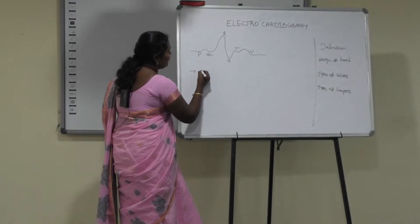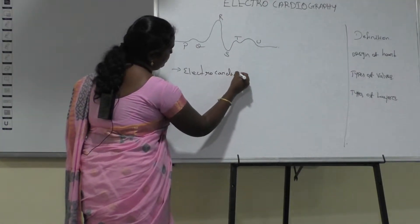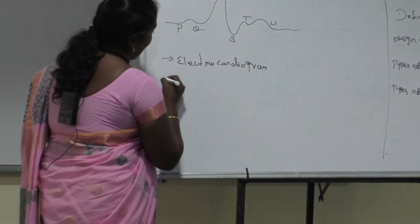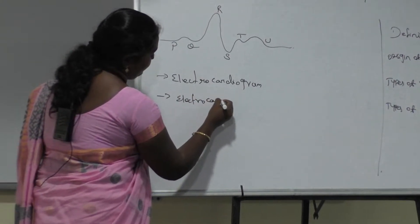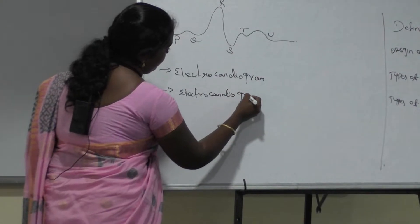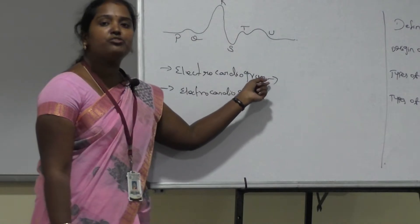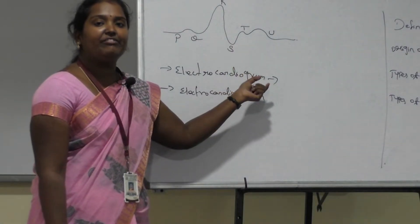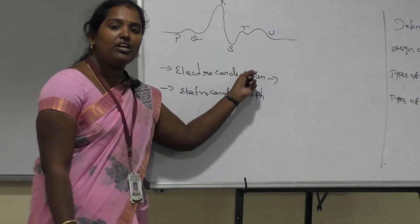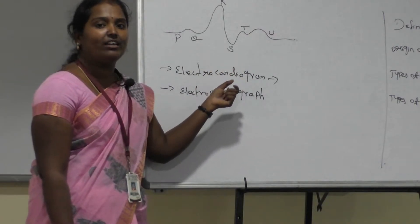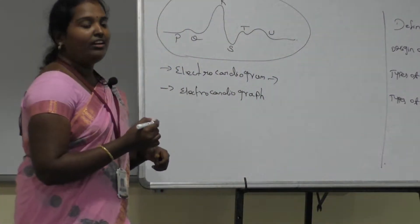Here we are discussing about the electrocardiograph and the electrocardiogram. The electrocardiograph means the measuring instrument — that instrument is used to measure the electrical activity of heart muscles. During this process, a particular waveform is generated, and that waveform is called the electrocardiogram.